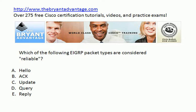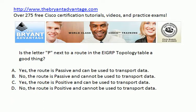Question 9: which of these five EIGRP packet types are considered reliable? All five are important and vital to EIGRP operation, but which ones are considered what we call reliable? Final question: is the letter P next to a route in the EIGRP topology table a good thing? Does it mean passive? Does it mean positive? Is it good or bad? Very important detail here.